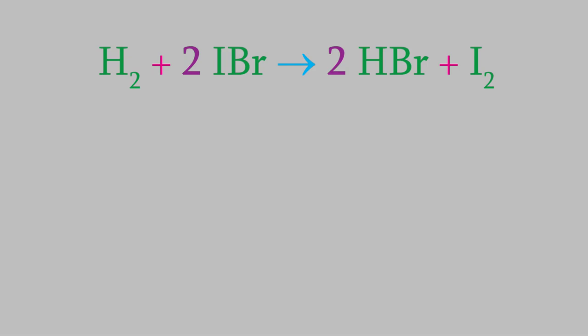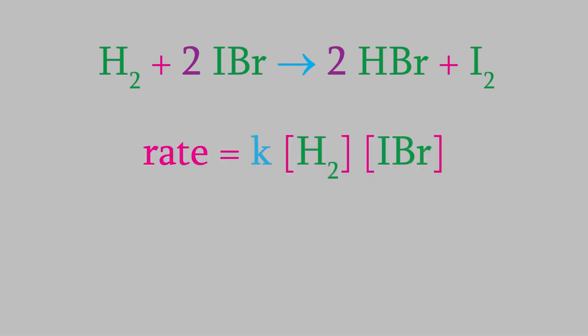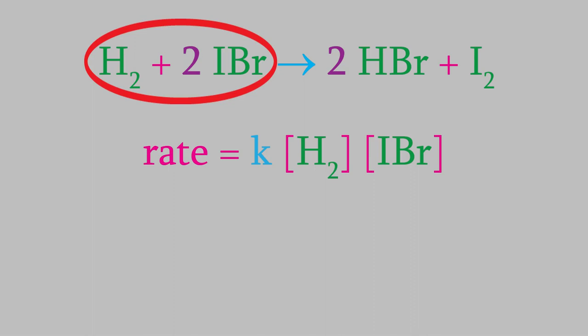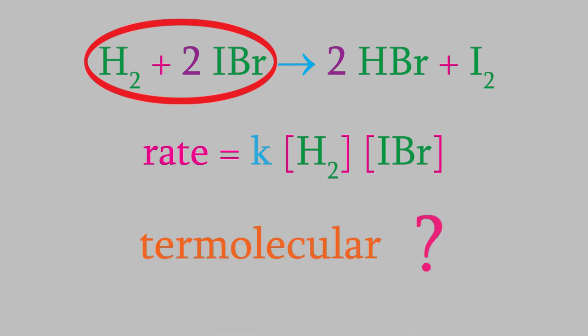Consider this reaction, in which hydrogen gas reacts with iodine bromide to form hydrogen bromide and iodine. This reaction is first order with respect to each of the reactants, which makes it second order overall. With that information, we can write the rate law. However, as you can see, there are three reactant molecules on the left side of the equation. That seems to mean that this must be a termolecular reaction in which three reactant molecules are involved in a collision. But that's not the case. And if we think about what's happening at the molecular level, we can see why not.